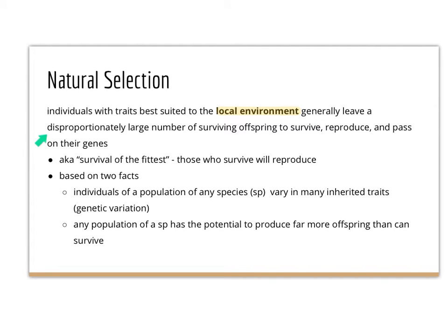"Disproportionately large number of surviving offspring" means those who are surviving are able to reproduce and leave more offspring with that beneficial gene than those with harmful genes. Like we saw in the breeding bunnies activity, we saw lots of furred bunnies in the next generation and not very many furless bunnies. Those surviving offspring also survive, reproduce, and pass on their genes.